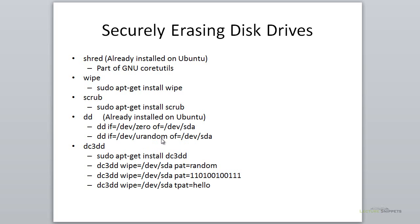You can also set a random pattern rather than zeros by using /dev/urandom as the input device, with the output file being /dev/sda. DC3DD does not come installed on Ubuntu by default, so you'd have to install it from the repository using sudo apt-get install dc3dd.